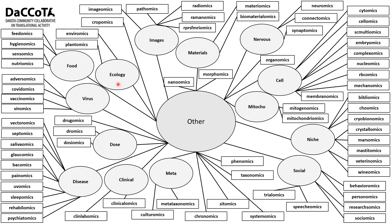Under ecology: plantomics (plants), environmentomics (environmental conditions), cropomics (crop genomics or general omics). Under images: imageomics (biomedical images, also imiomics or imagingomics), pathomics (image analysis to generate quantitative tissue phenotype features, also described as digitized pathology), radiomics (radiomic features for medical images — especially CT, PET, MRI), ramenomics (Raman spectrometry — not ramen noodles), and RS-fMRI omics (resting-state functional MRI — a very bad omics).